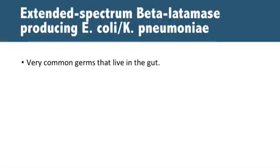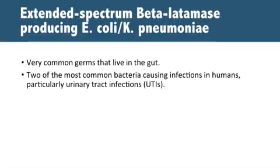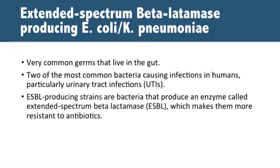E. coli are a very common bacteria that normally live harmlessly in the gut and are one of the most common bacteria causing infections in humans, particularly urinary tract infections, or UTIs. These infections can sometimes progress to cause more serious infections, such as kidney infections, or spread to the blood, which can be life-threatening. ESBL-producing strains are bacteria that produce an enzyme called extended-spectrum beta-lactamase, which makes them more resistant to many commonly used antibiotics and makes the infections harder to treat.